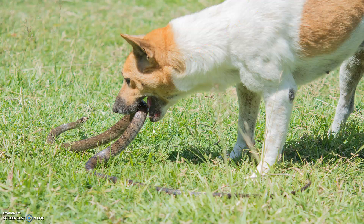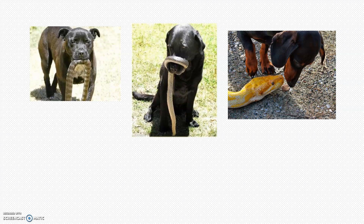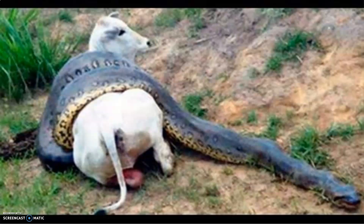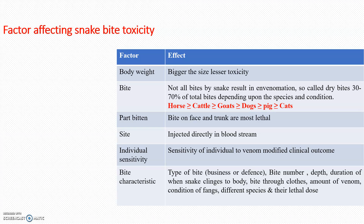Clinically, animals get snake bites when they approach snakes and the snake retaliates. Factors affecting snake bite toxicity include the part of the body bitten — the face and trunk are most lethal — whether venom is injected directly into the bloodstream, and the type of bite, whether it is a defense bite or a predatory bite.